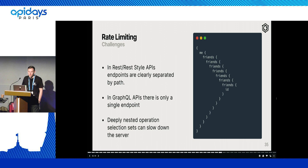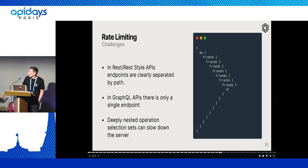We can optimize the engine, but at some point we can't do much because people are sending too deep queries. In REST-style APIs we always had clearly separated endpoints, but in GraphQL APIs we only have one endpoint. A deeply nested query can be dangerous — especially in this example where we have a MeQuery which fetches a single user, and then for the user we select the friends, and then of those friends we select the friends, and so on. It will grow exponentially, ultimately killing the server.